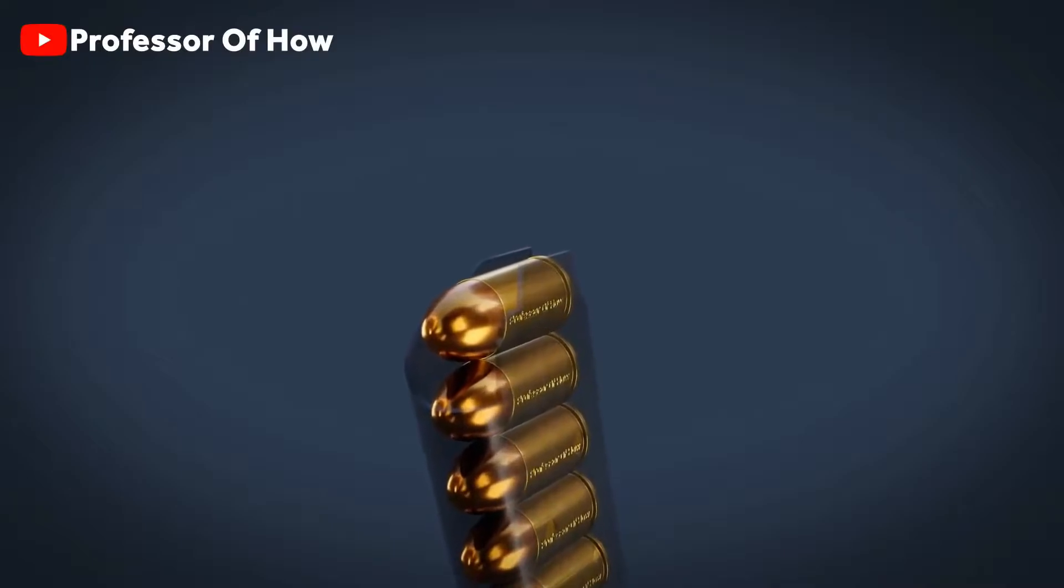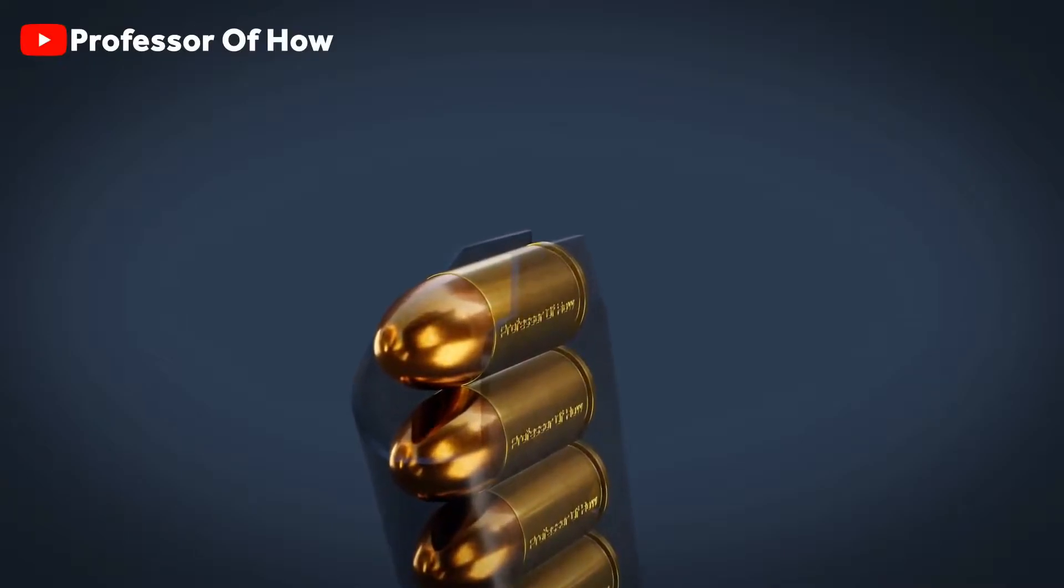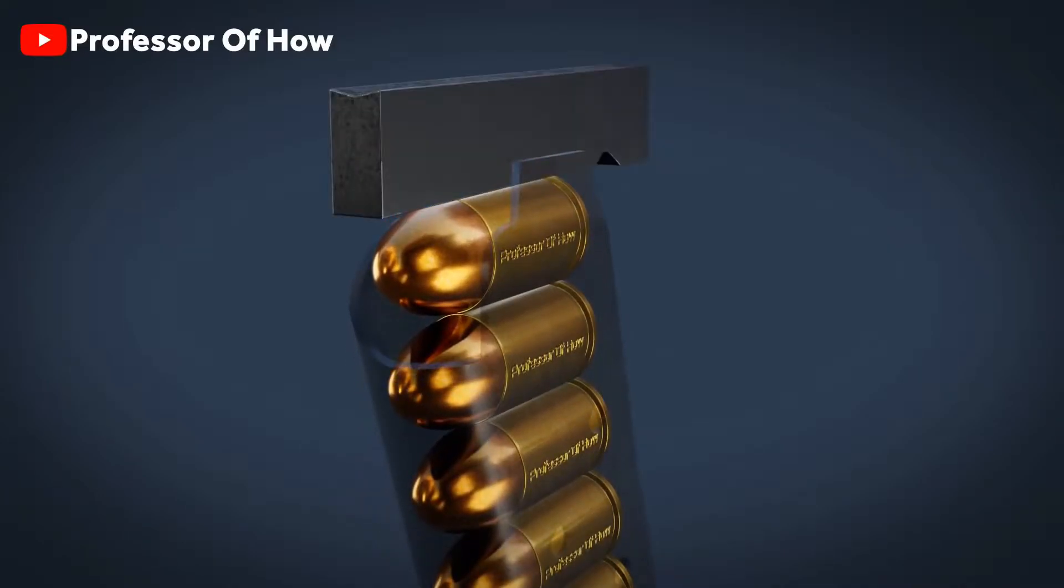Now what happens is, when magazine is outside the gun, then cartridge stays on the top level only. But when magazine is put inside the gun, the cartridge at the top is pressed a bit because of the slide.